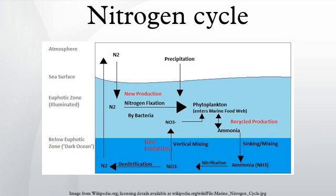Organic nitrogen may be in the form of a living organism, humus, or in the intermediate products of organic matter decomposition. The processes of the nitrogen cycle transform nitrogen from one form to another. Many of those processes are carried out by microbes either in their effort to harvest energy or to accumulate nitrogen in a form needed for their growth. The diagram above shows how these processes fit together to form the nitrogen cycle.